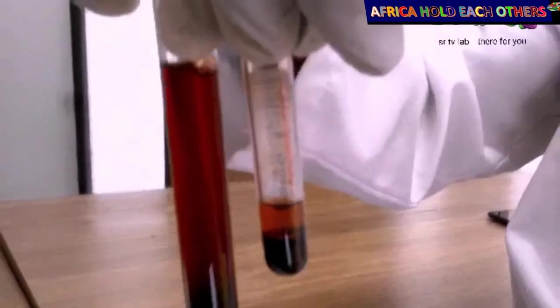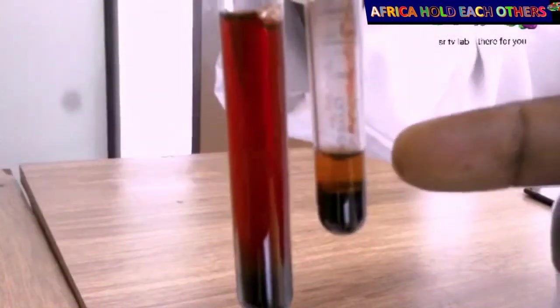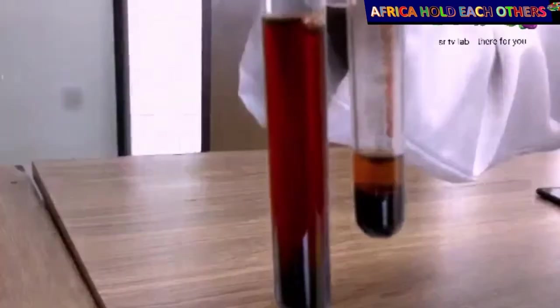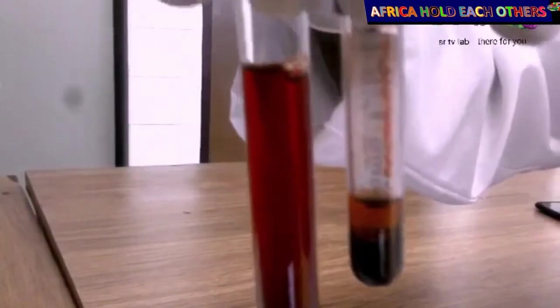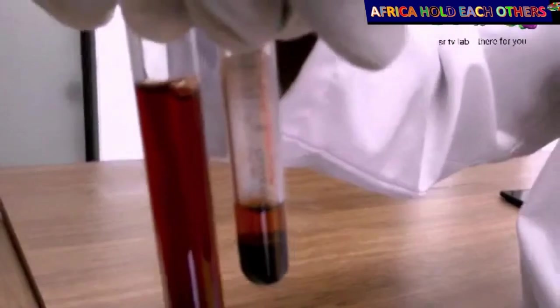And this big tube, the color has become translucent. See clearly. This upper part is plasma, brownish color. The lower part is concentrated red blood cells. This big tube is blood that has undergone hemolysis.